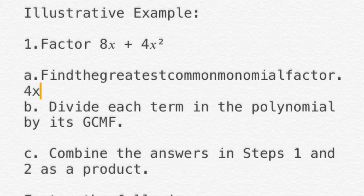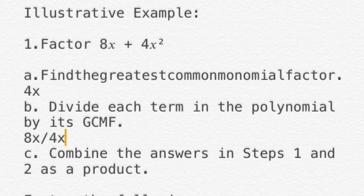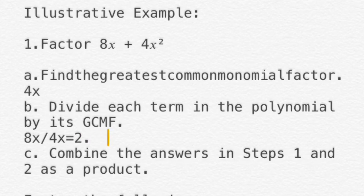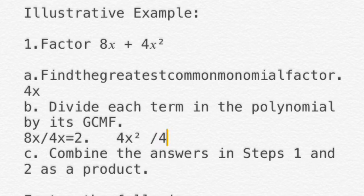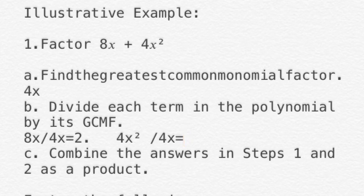Step 2: divide each term in the polynomial by its GCMF, which is 4x. First, 8x divided by 4x: 8 divided by 4 is 2, and x divided by x is 1, so this equals 2. Second, 4x squared divided by 4x: 4 divided by 4 is 1, and x squared divided by x is x, so 4x squared divided by 4x equals x.